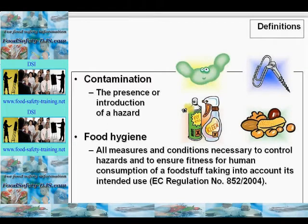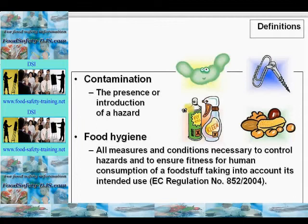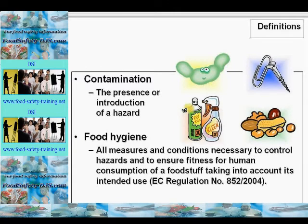Food hygiene also involves preventing objectionable matter getting into food, and includes rejecting contaminated or poisonous food or food from suspect sources, protecting food from contamination including harmful microorganisms, poisons, allergens and foreign bodies, preventing multiplication of bacteria to a level which would result in illness of consumers or early spoilage of food, destroying microorganisms in the food or food environment, and discarding or removing unsafe, unfit or contaminated food.